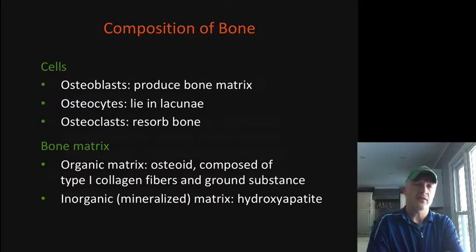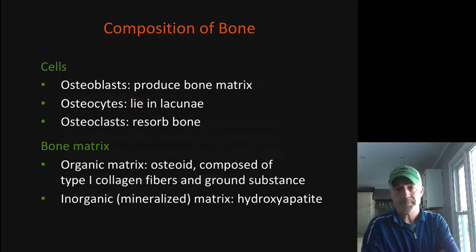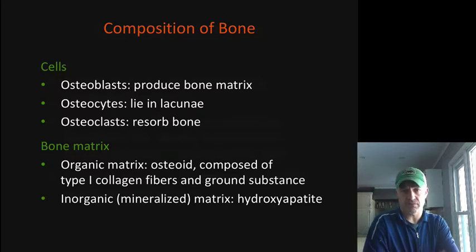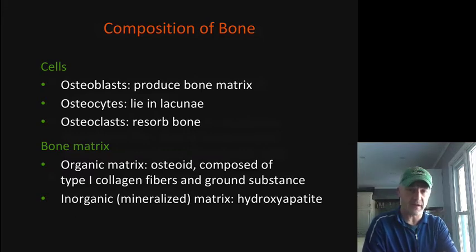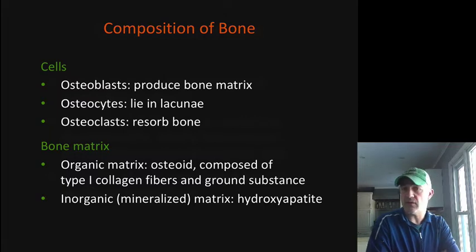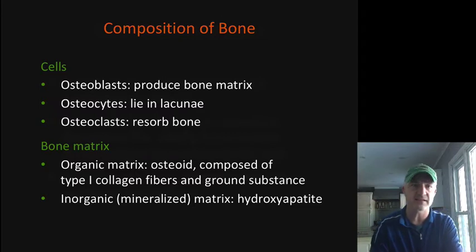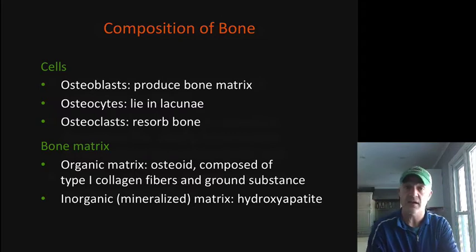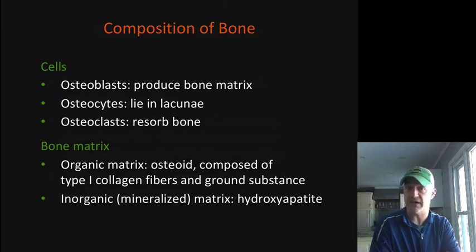Bone also has cells that can help reabsorb it. Because bone is a storage warehouse for calcium, when we have excess calcium we deposit new bone. When we need calcium and it's not coming in from our diet, we can reabsorb bone. We do that with a cell called an osteoclast, which releases acidic secretions that break down the bony matrix and make calcium available to the rest of the body.